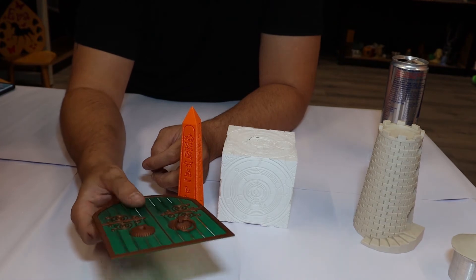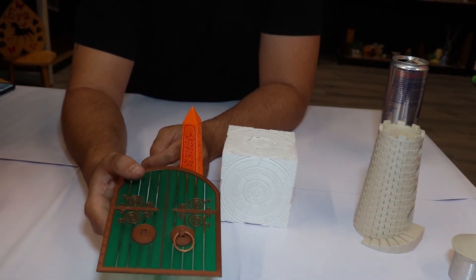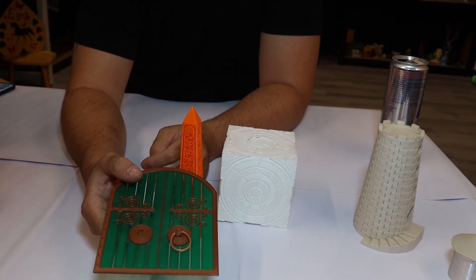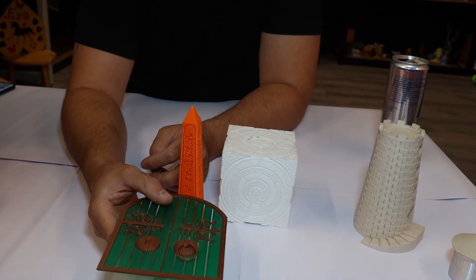We used the M600 command to do a pause in the middle of the print so that we could print this in two colors, and it came out really nice. It all printed flat and came out really clean.